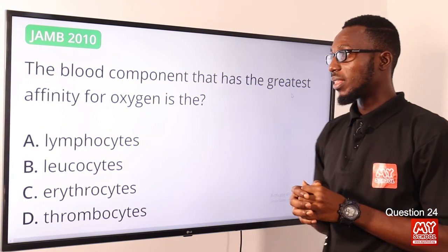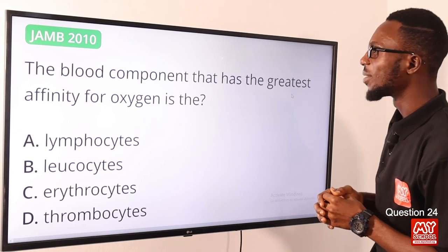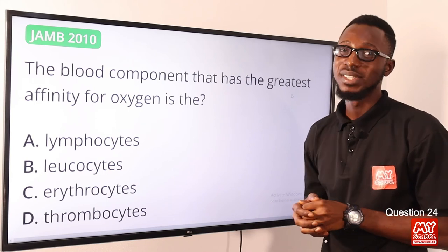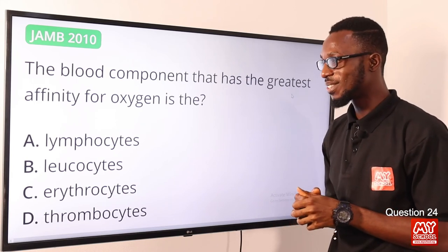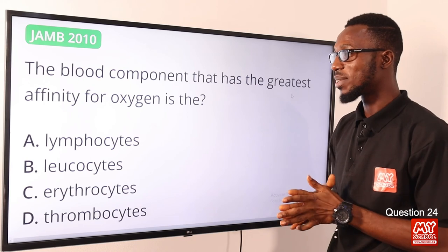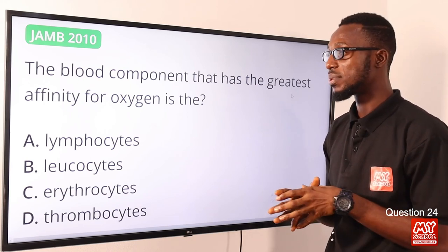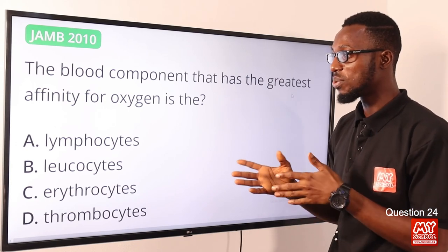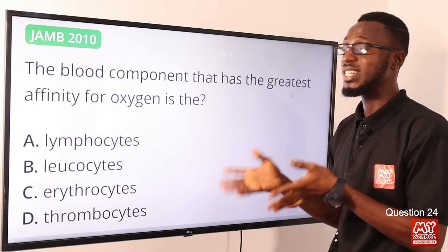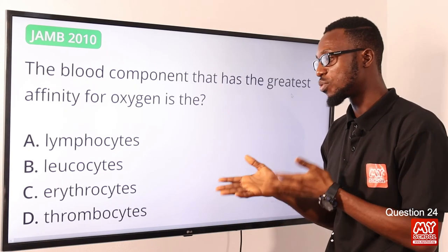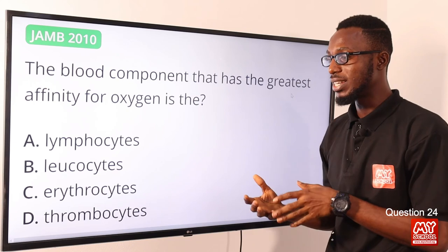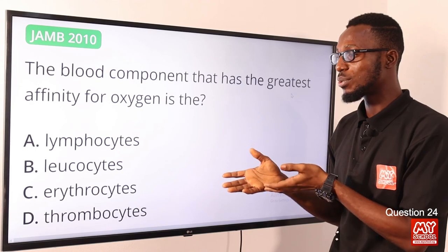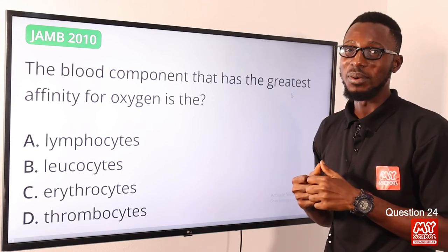Question 24: The blood component that has the greatest affinity for oxygen is the erythrocyte — the red blood cell — because of hemoglobin. Lymphocytes are a type of white blood cell that produce antibodies. Leukocytes are white blood cells involved in body defense. Thrombocytes (platelets) are involved in blood clotting. The correct option is option C, the erythrocyte.